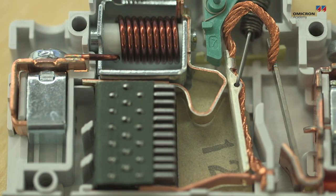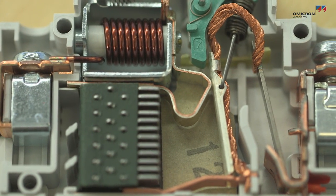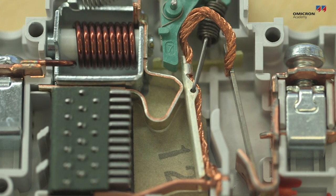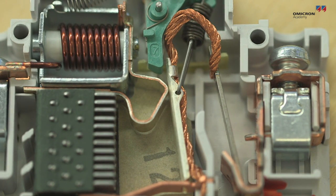Despite its small size, an MCB has a rather sophisticated design consisting of two separate tripping mechanisms for overloads and short circuits.